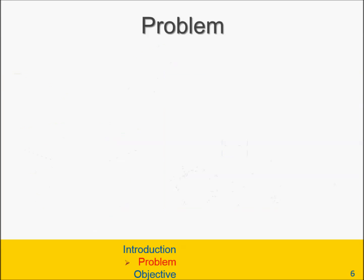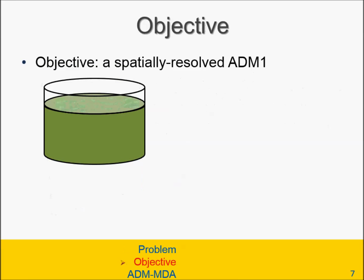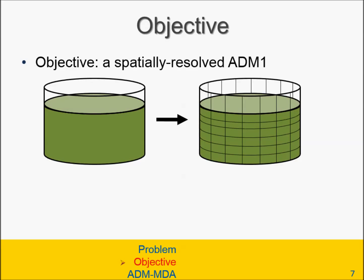The current state-of-the-art anaerobic digestion model is ADM1, published in 2002 by the International Water Association. This model is a very sophisticated biochemistry model, however, it is a bulk model and it doesn't include any form of fluid flow. Therefore, it can't resolve concentration gradients or stagnation regions or anything of that sort. The purpose of my research is to produce a spatially resolved version of ADM1, and I call it ADM-MDA.